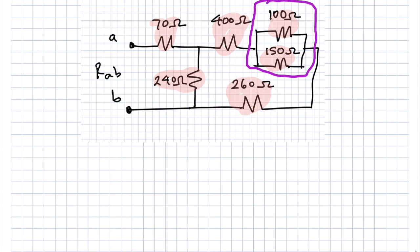Alright, so once I know something's in parallel, I can find the equivalent resistance by doing 1 over R equals 1 over R1 plus 1 over R2 inverse. Alright, so when you type that into your calculator, I believe you get 60 ohms.